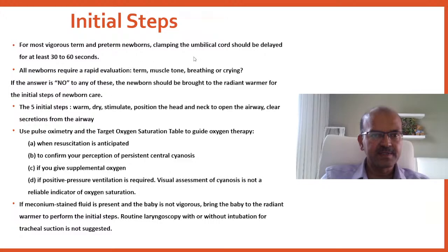For most vigorous term and preterm babies, umbilical cord clamping should be delayed at least 30 to 60 seconds. All newborns require rapid evaluation: is the baby term, is muscle tone normal, and is the baby breathing or crying? If no to any, bring to the radiant warmer. The five initial steps are: warm, dry and stimulate, position the head and neck in a neutral/sniffing position to open the airway, and clear secretions if needed. Use pulse oximetry when resuscitation is anticipated, to confirm cyanosis, when supplemental oxygen is given, or when PPV is required.